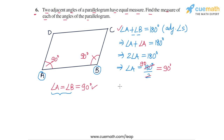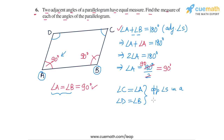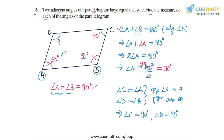Now angle C and angle D can be easily calculated. Angle C is equal to the opposite angle A, and angle D must be equal to the opposite angle B. This is because opposite angles in a parallelogram are always equal.